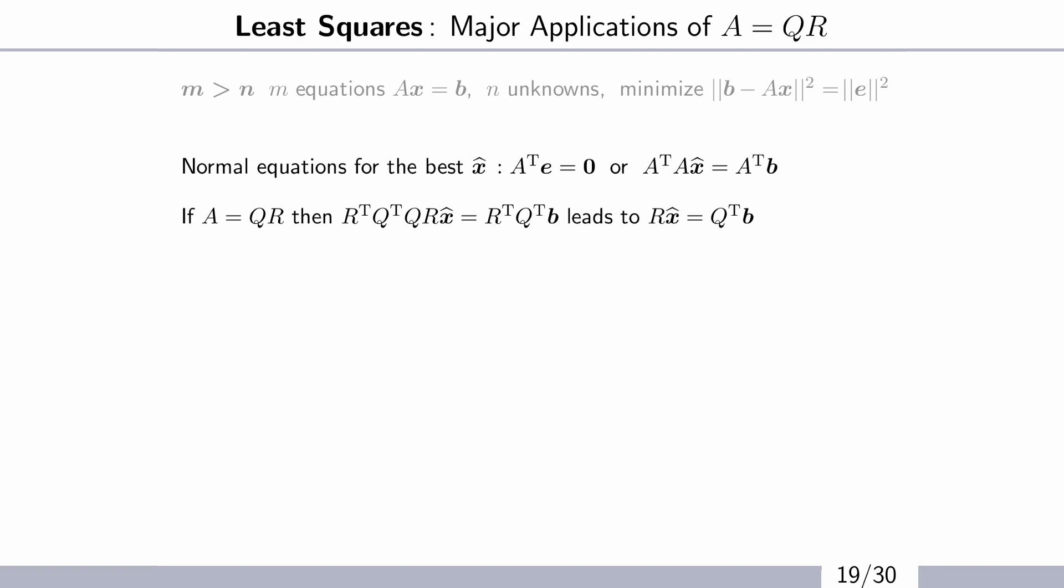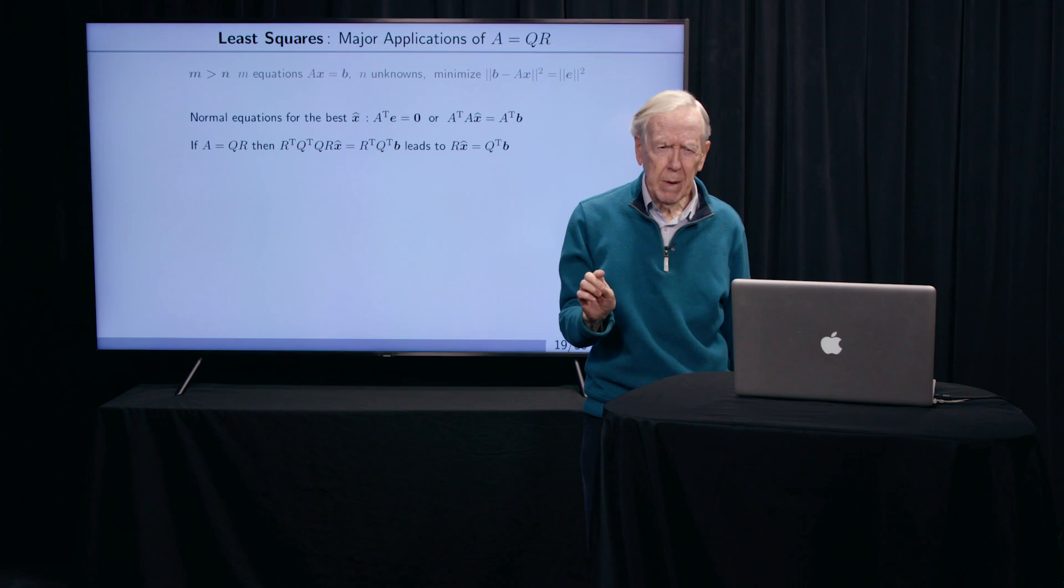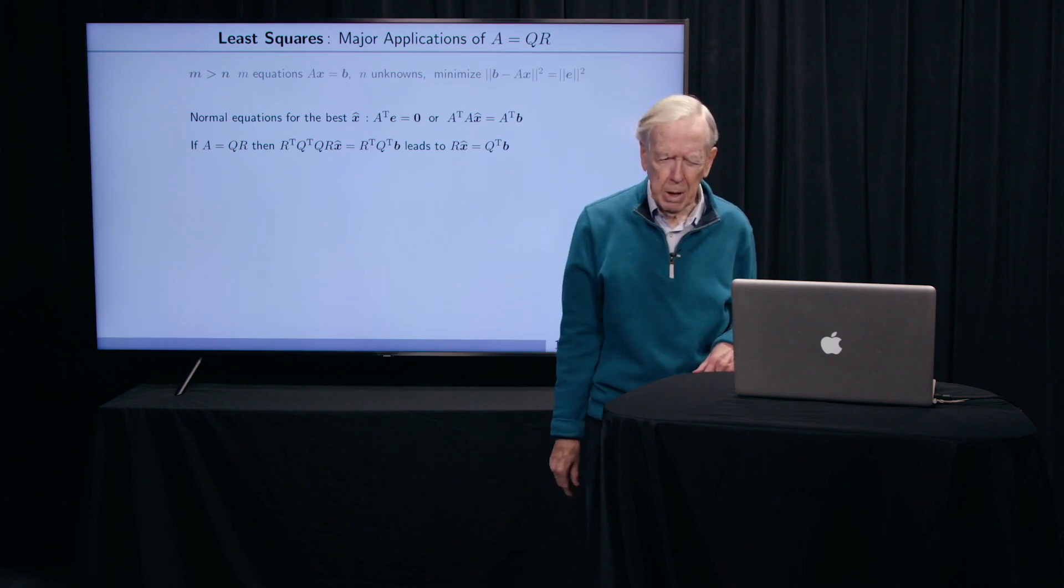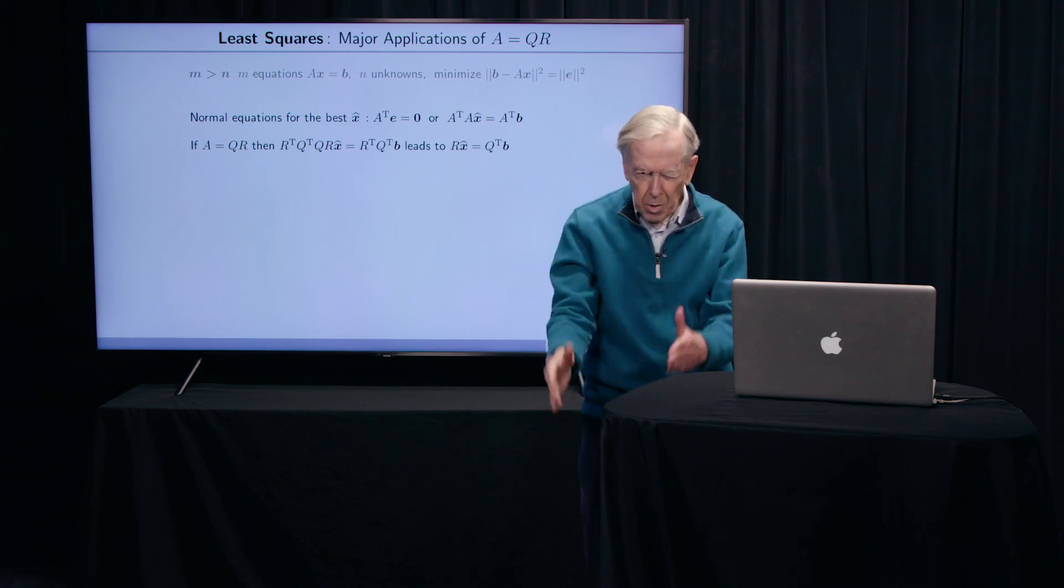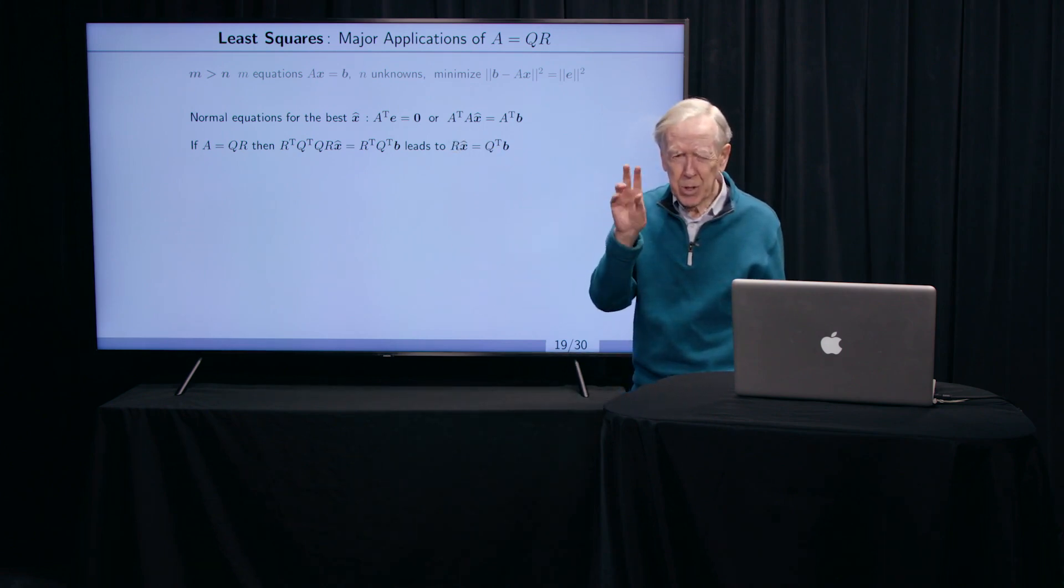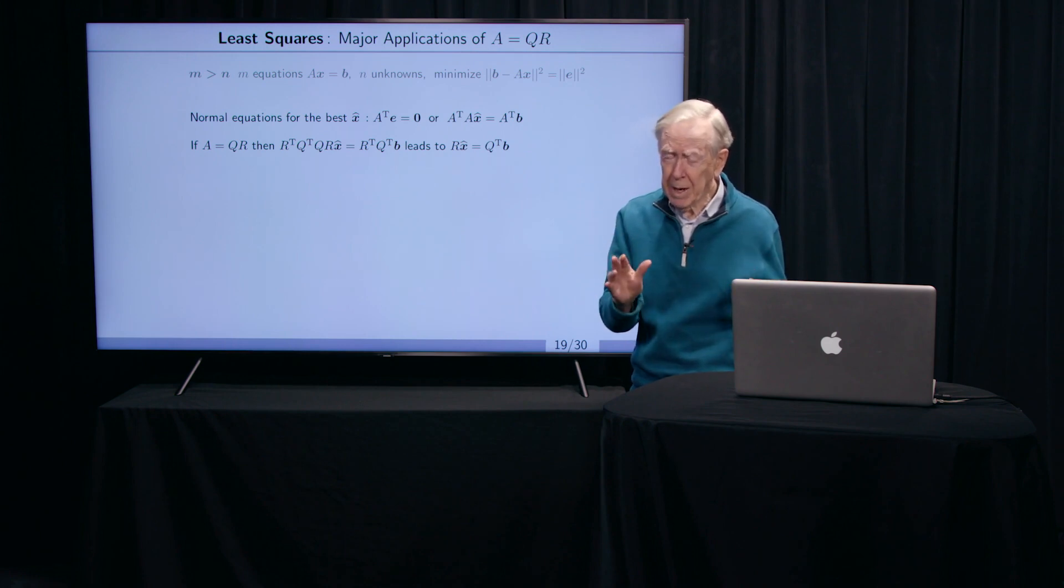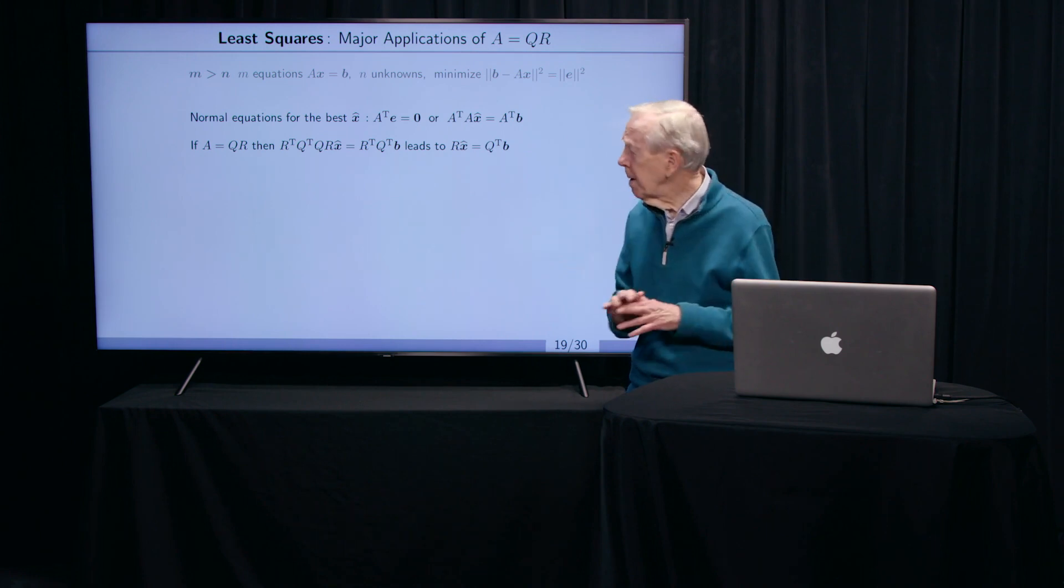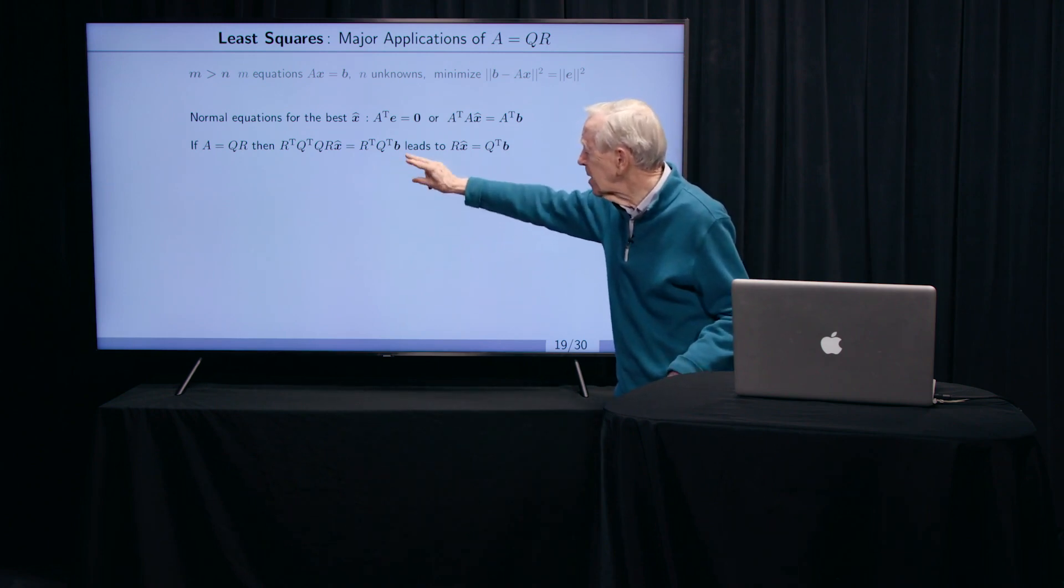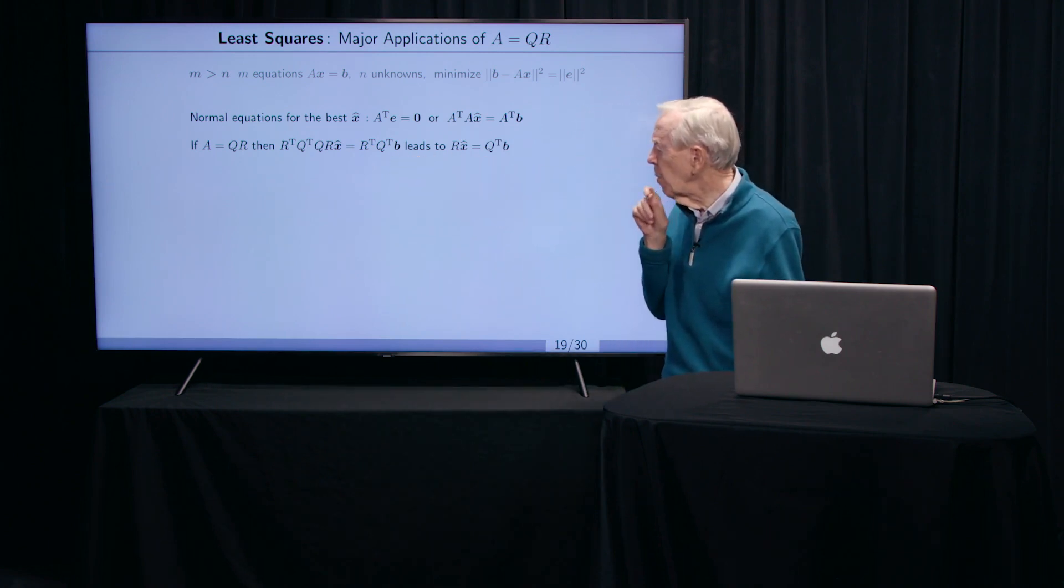And it's discovered by multiplying both sides by this A transpose matrix. So A transpose A is a terrifically important matrix. It's a square matrix. See, A didn't have to be square. I could have lots of measurements there - many, many equations, a long thin matrix for A. But A transpose A always comes out square and also symmetric. And it's just a great matrix for theory, and this QR business makes it work in practice.